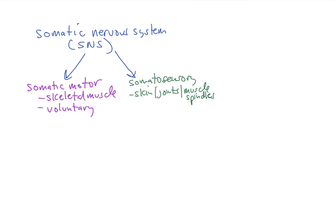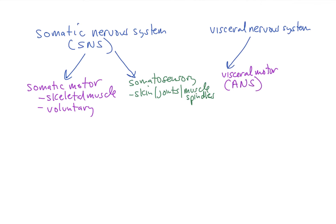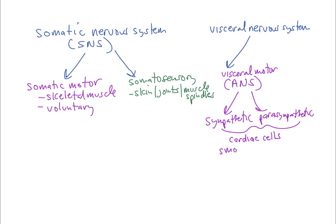We also have the visceral nervous system, which innervates the viscera — the internal organs. The visceral motor division is referred to as the autonomic nervous system, made up of the sympathetic and parasympathetic divisions, which innervate cardiac cells, smooth muscle cells, and secretory glands. The other division is visceral sensory, which carries afferent information from the internal organs.